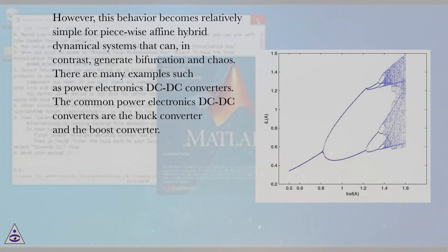However, this behavior becomes relatively simple for piecewise affine hybrid dynamical systems that can, in contrast, generate bifurcation and chaos. There are many examples such as power electronics DC-DC converters. The common power electronics DC-DC converters are the buck converter and the boost converter. They are switching systems with time variant structure.